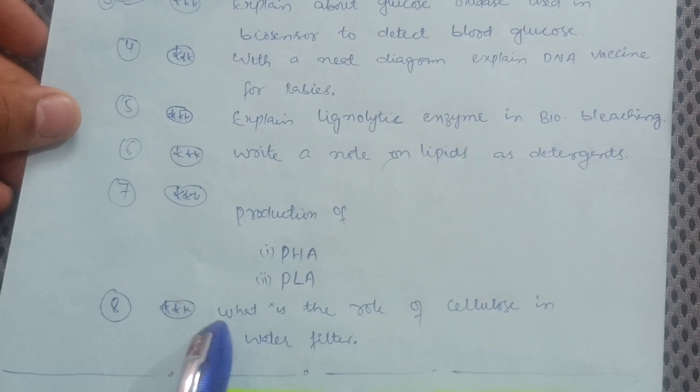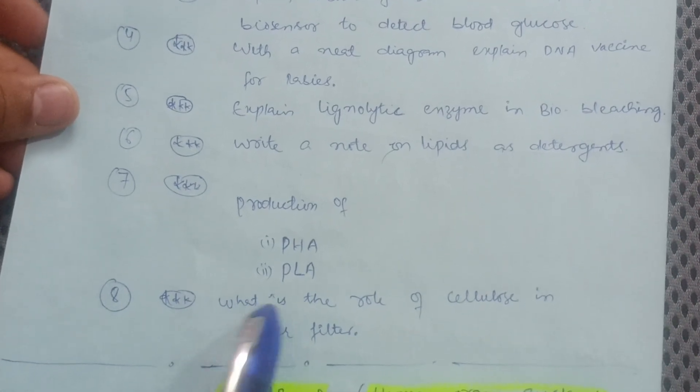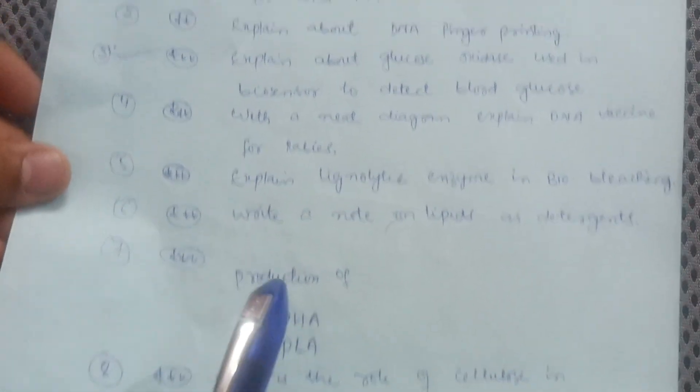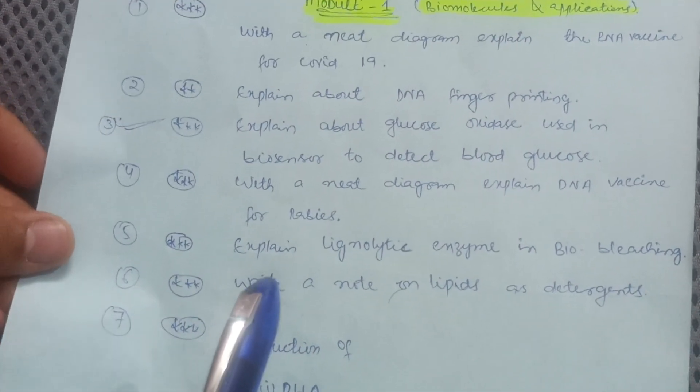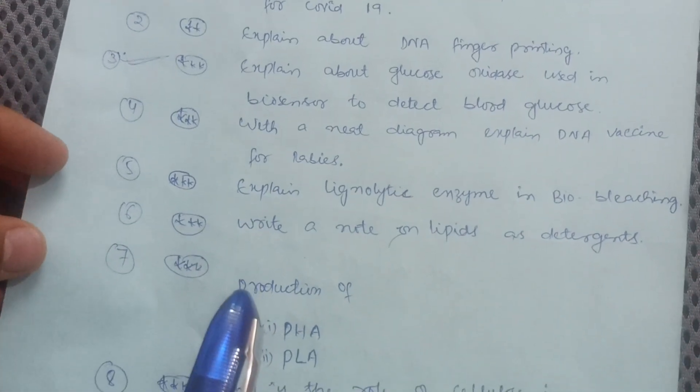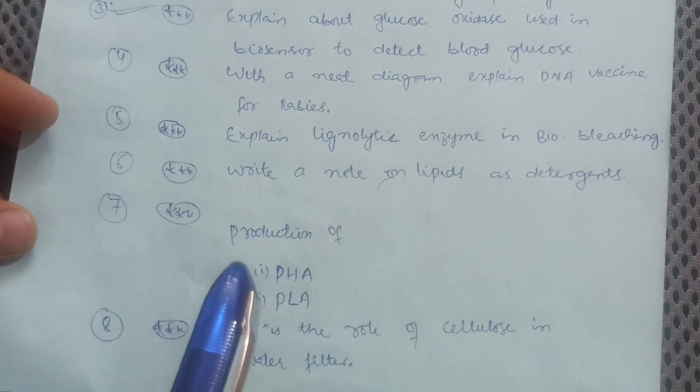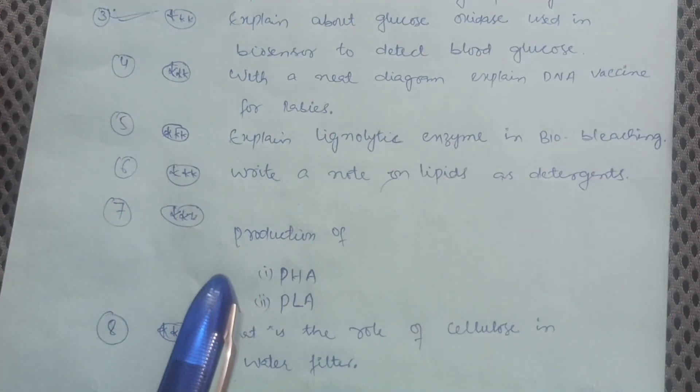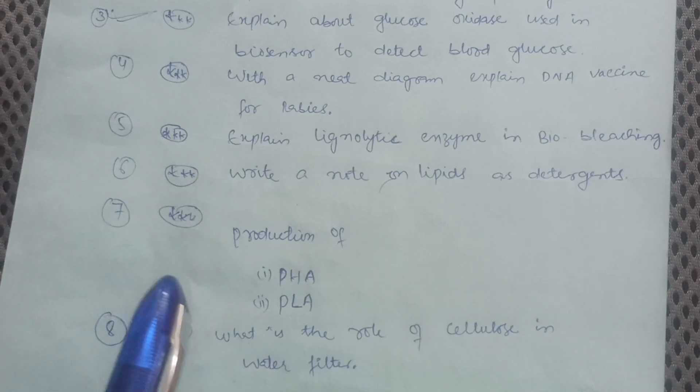Then some production of PHA and then PLA. And last question in this particular module, that is what is the role of cellulose in water filter. So these are the eight questions which you have to cover in module first. As you already know, there is a lot of syllabus in this particular subject, Biology, so I have taken eight important questions which will definitely be in the examination.